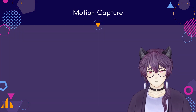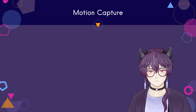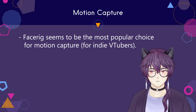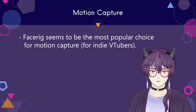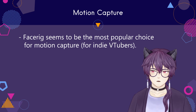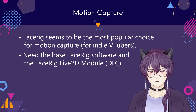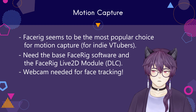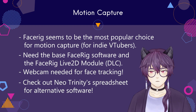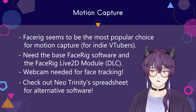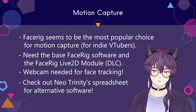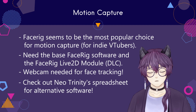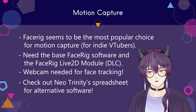So once your model is ready, you'll need software with motion capture capabilities. I'm currently using FaceRig, and for now FaceRig seems to be the most popular choice for Live2D motion capture. You'll also need to buy the Live2D module for your avatar to work. And it should be an obvious one, but you'll need a webcam. There are other alternatives to FaceRig out there, but they're not well known. Another VTuber, NeoTrinity, has made a spreadsheet of available face tracking software — I'll link it below. Might give them a try myself eventually.